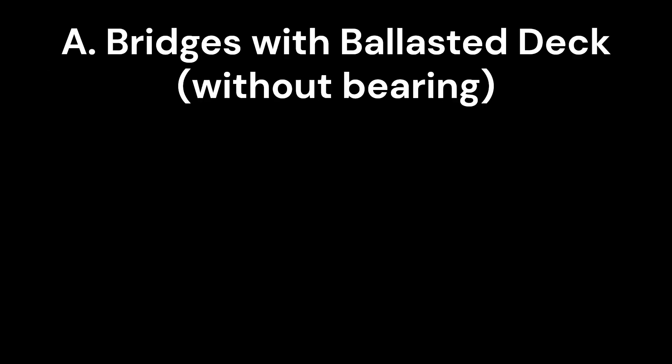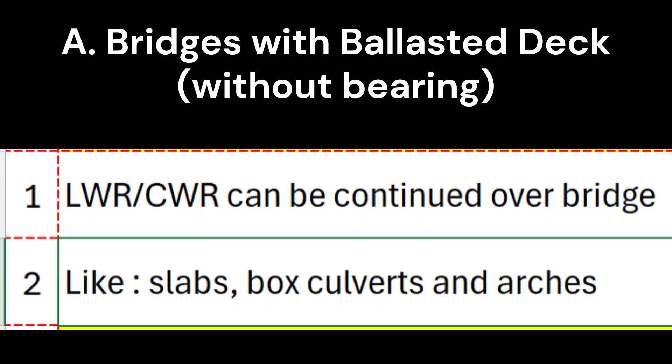First, let's discuss the first type of bridge. A. Bridges with ballasted deck, without bearing. On this type of bridge, LWR or CWR can be continued over the bridge, like slabs, box culverts and arches.